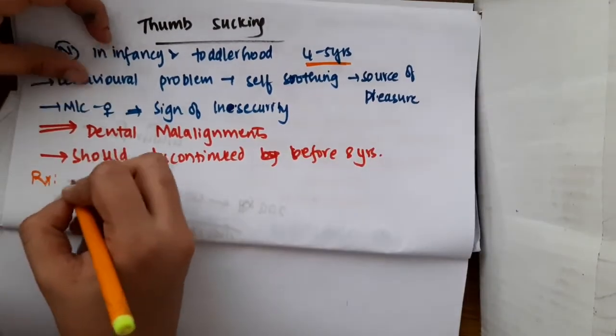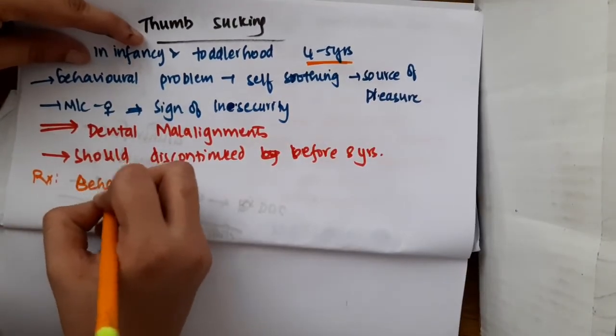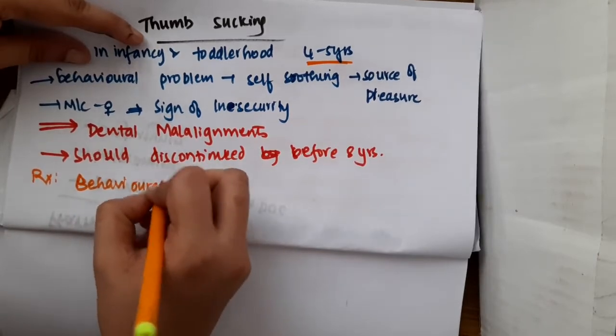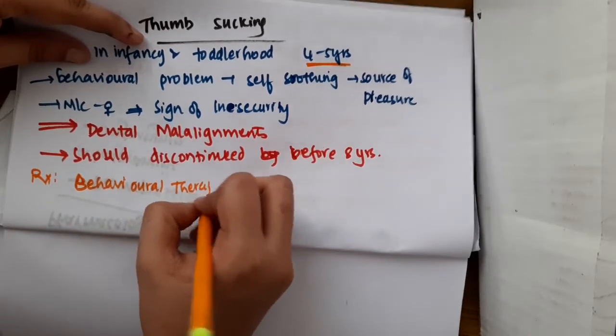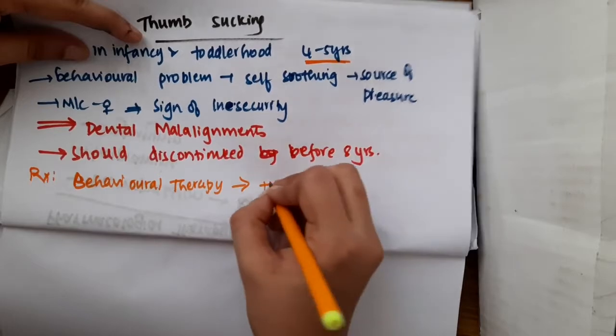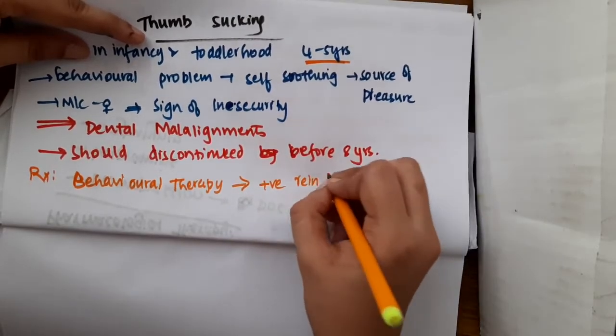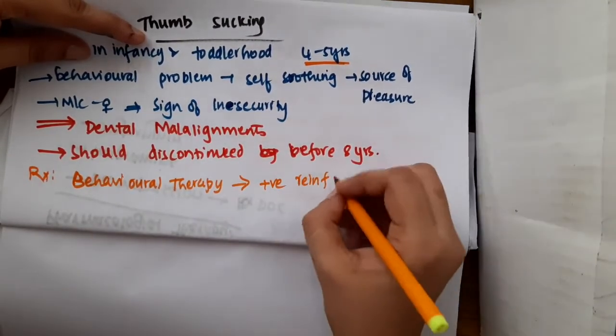After that, we will have to give behavioral therapy. In behavioral therapy, we can give positive reinforcement where we give some gifts or chocolate to the child whenever she stops thumb sucking.